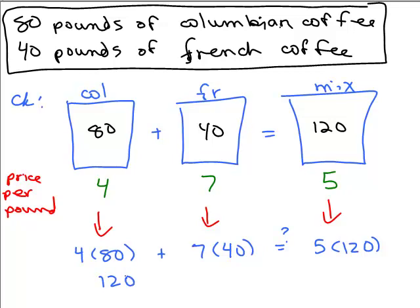So we could see it's true that way. Another way is actually, you'd say, well, you've bought, for the Colombian, you've got 80 at $4 a pound. So that would have cost you $320.